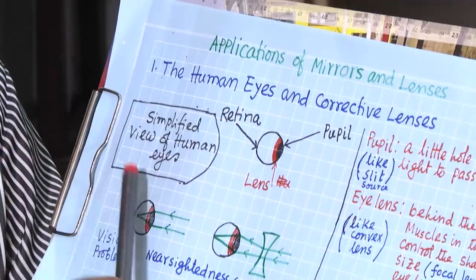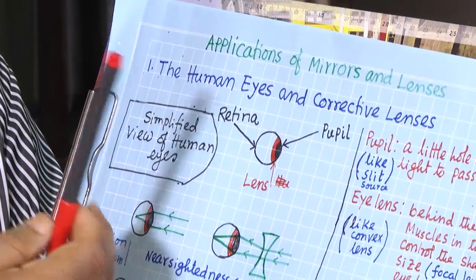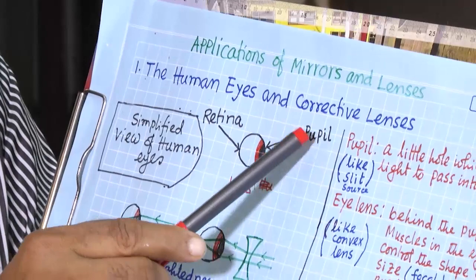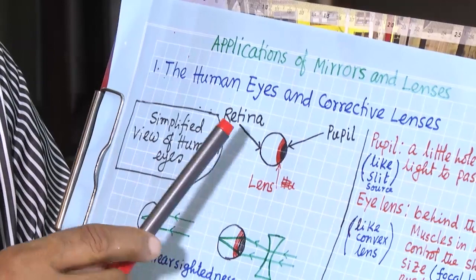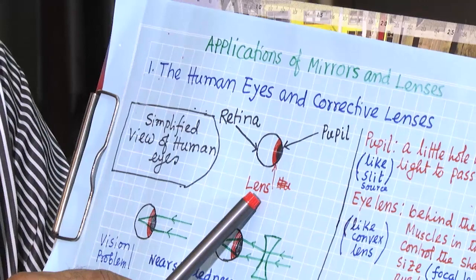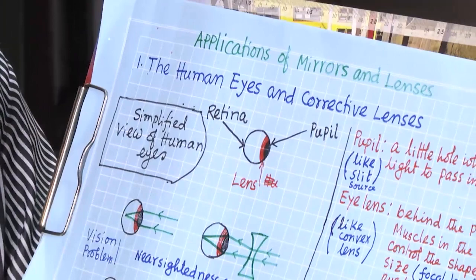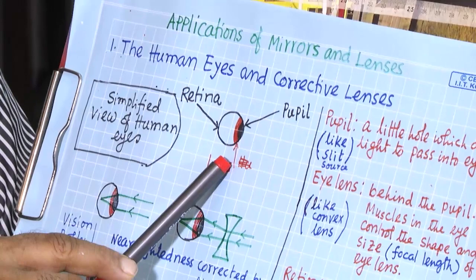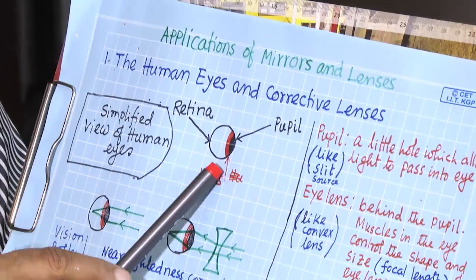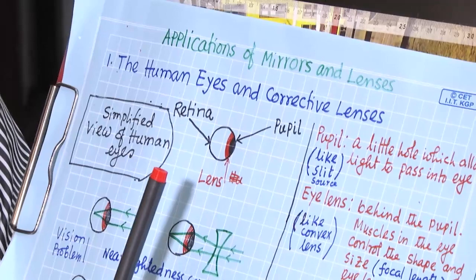The pupil is basically — if we compare with our experiment — it is the slit, the entrance of the light into the eye. Light comes through the slit and falls on the lens. It controls the entrance of light in the eye. This is the lens. The difference between the human eye lens and the lens we use in experiments is that our lens is fixed.